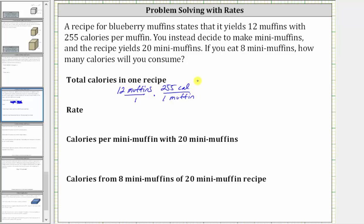Writing it this way, we can see we have muffins divided by muffins, and therefore the units of muffins simplify out, leaving us with the units of calories. And 12 times 255 is equal to 3,060, giving us 3,060 calories as the total calories in one recipe. We can express this as a rate: 3,060 calories per one recipe.